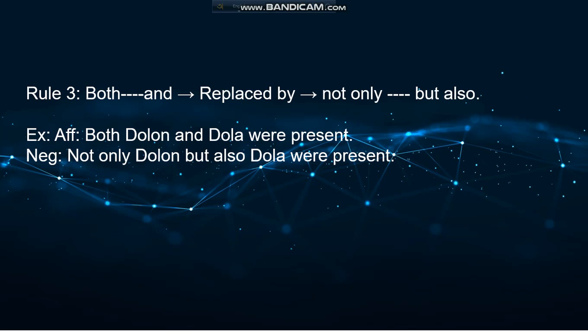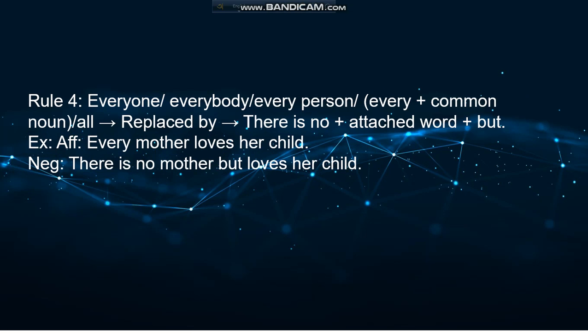Rule four: 'everyone,' 'everybody,' 'every person,' and 'every' plus a common noun are replaced by 'there is no...but.' For example: 'Every mother loves her child' becomes 'There is no mother but loves her child.' The structure is: 'there is no' plus the noun, then 'but,' followed by the remaining words.